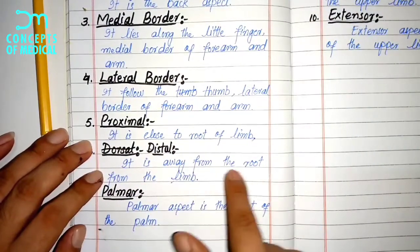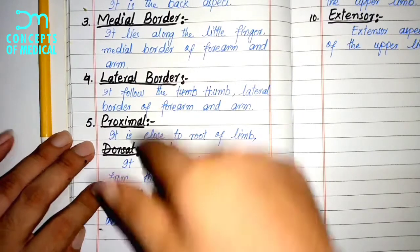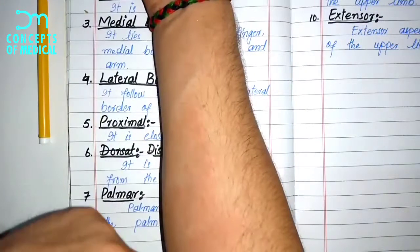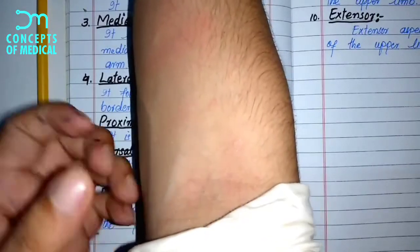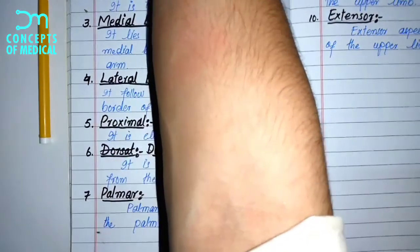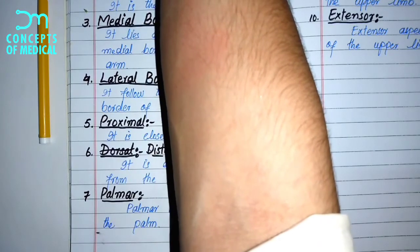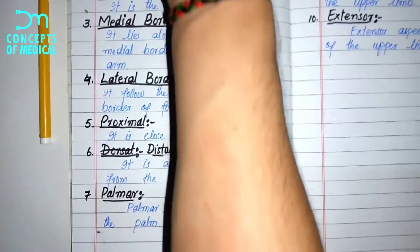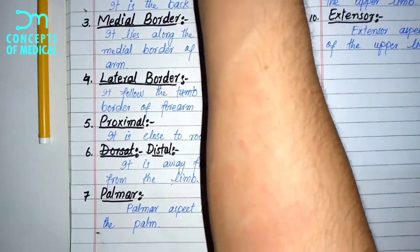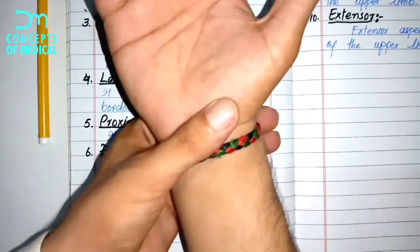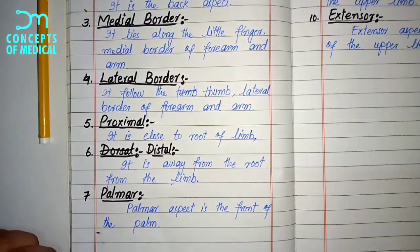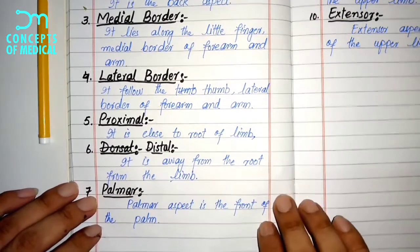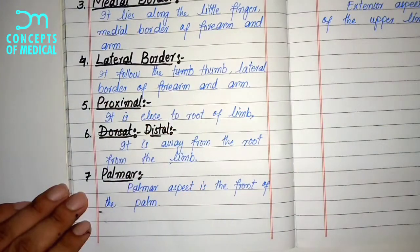Another term is distal, meaning away from the root of the limb. The proximal end of the radius is attached to the humerus, which connects to the whole trunk. The distal end of the radius makes a joint with the carpal bones. So distal is used for describing structures that are away from the root side.